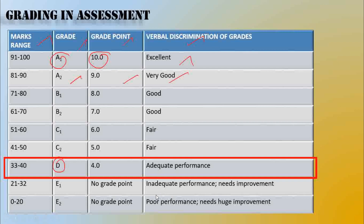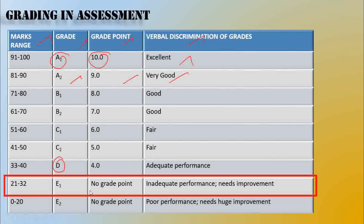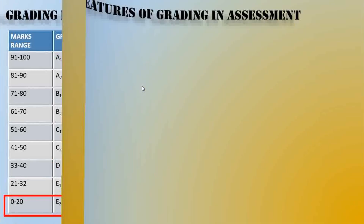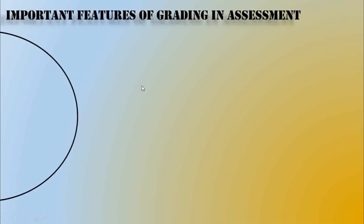You must get a passing grade in all subjects. They will not provide any grade point in the case of E1 and E2 — these are poor performance grades, corresponding to marks of 0 to 20. From this table you will know what the mark is, what grade it corresponds to, and what we call it verbally.